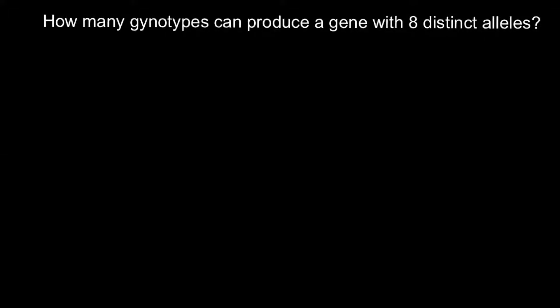In this video I'm going to explain how many genotypes can be produced by a gene with eight distinct alleles. If you know how to solve this problem, you may pause the video and try to solve it on your own first. When you are ready, you can resume and compare your answer with my answer and explanation. I'm going to give you the theory first, and then show you a simplified mathematical method that takes just seconds to solve analogous problems.